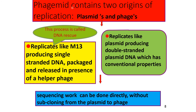Phagemid contains two origins of replication: phasmid or phage. This process is called DNA rescue. It replicates like M13, producing single stranded DNA that is packaged and released in the presence of a helper phage.